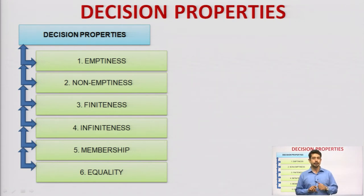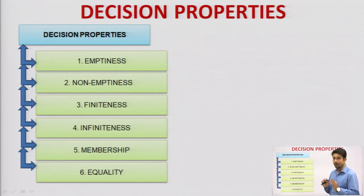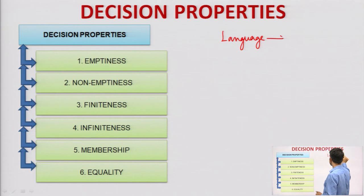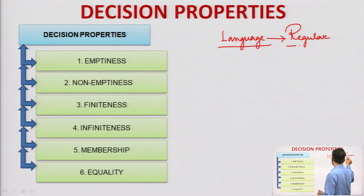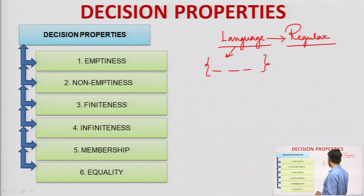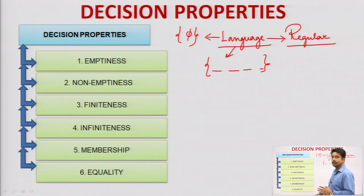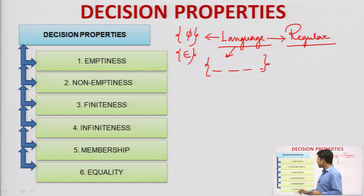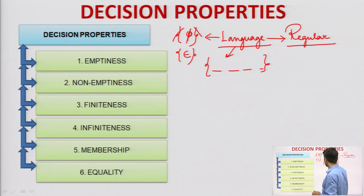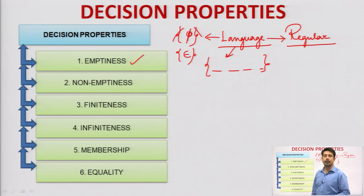Now let us move to the next property known as decision properties. These are also important properties or parameters. If I take a regular language and check whether the language has some sort of strings in it — if the language does not have any string, then it is represented as an empty set or null. Epsilon means a single element with no string attached. That means if no string is attached to the language, that property is said to be emptiness. If some strings are present, then the property is said to be non-emptiness.